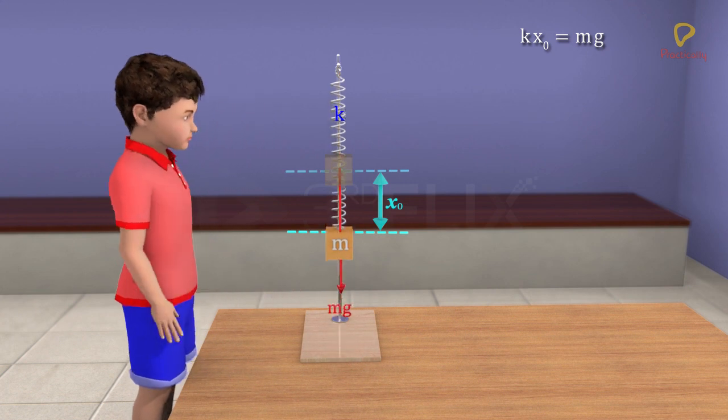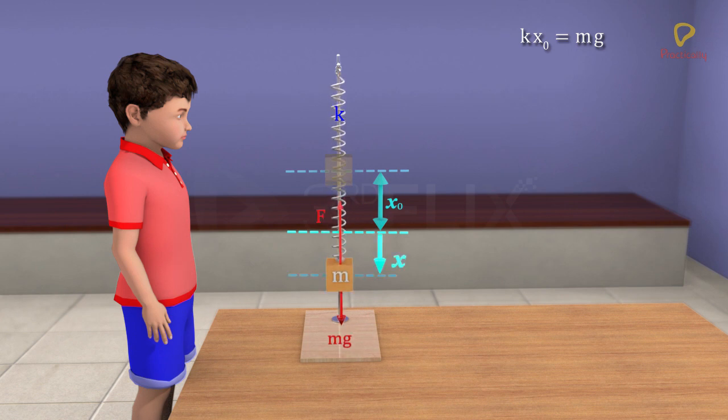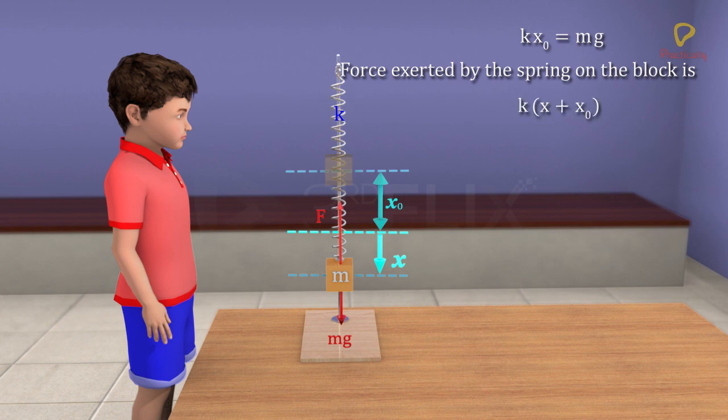Let the block be disturbed from its equilibrium position. When the block is at position x from equilibrium position, the force exerted by the spring on the block is k times x plus x0.